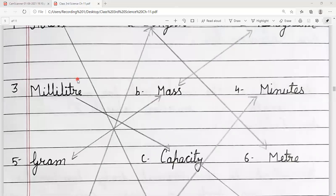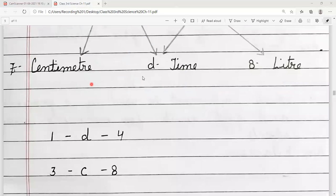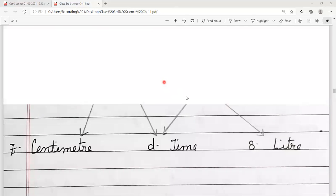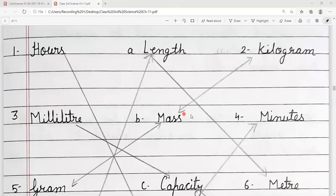First hai humara hours. Hours humara kis se match kar raha hai? Hours match kar raha hai D. Means, time se. Aur kis se match kar raha hai? Number 4. Means, minutes. Yadi hum time ko lenge toh kya banega? Hours and minutes.